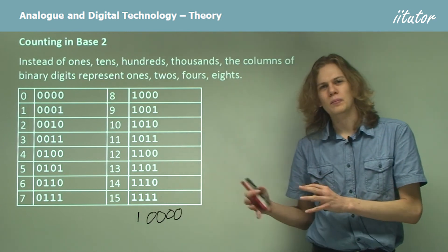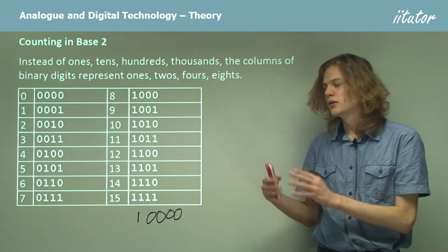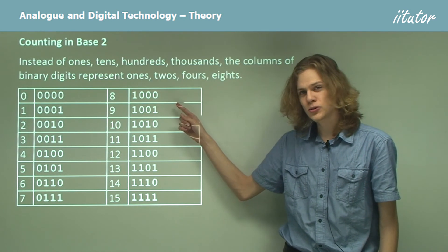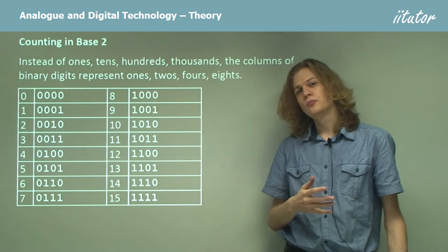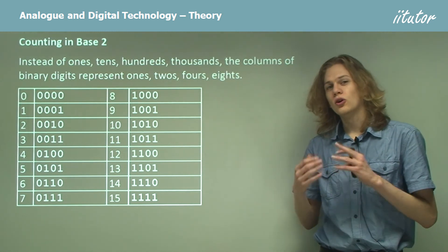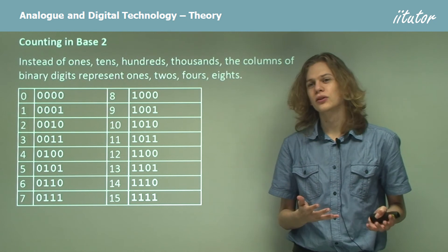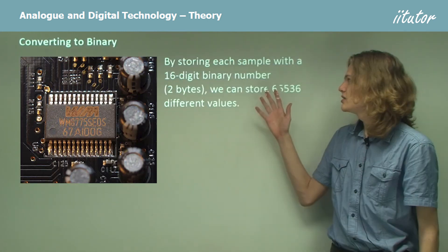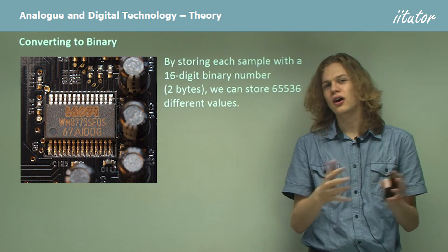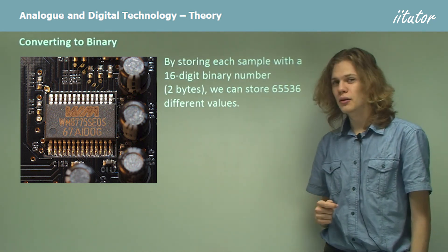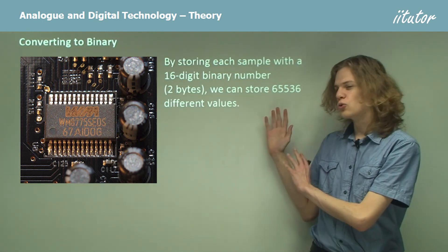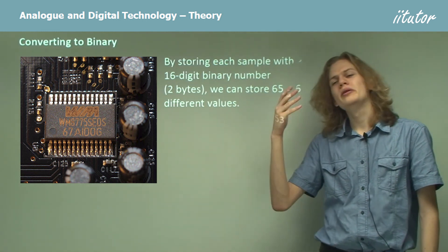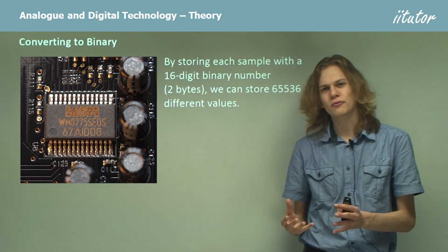The length of a binary number in terms of digits is much longer than a base 10 number. On the other hand, we're only ever using 1s and 0s, and the great advantage of this is that a computer can represent a 1 with an electric current and a 0 by a lack of electric current — so we don't need to worry about the strength of the current at all, simply whether it's there or not. By storing each sample — each number representing the height of the waveform — as a 16-digit binary number, that's 2 bytes, we can store 65,536 different values, which is more than enough for any amplitude of an analog signal.